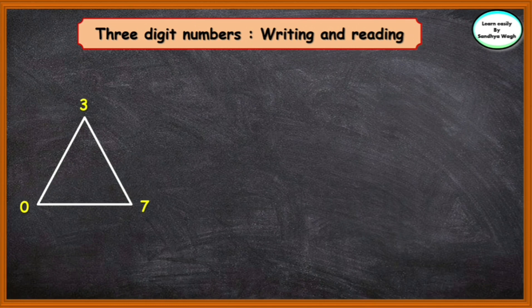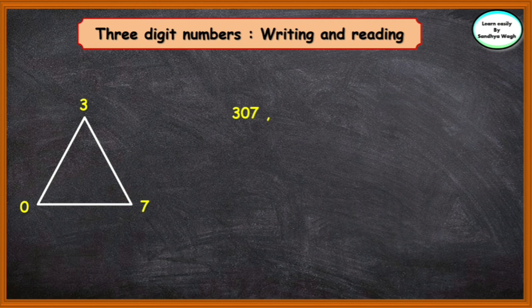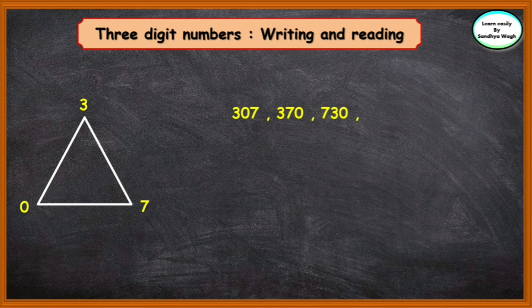Now, children, in this example the digits are 3, 7, and 0. Let us form numbers using these digits. Taking 3 in hundreds place, the number will be 307. Interchanging the ones and tens place gives us 370. Now taking 7 in hundreds place, the number will be 730. Interchanging the tens and ones place gives us 703.